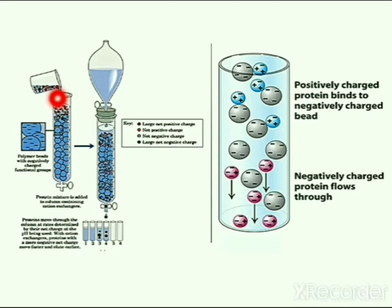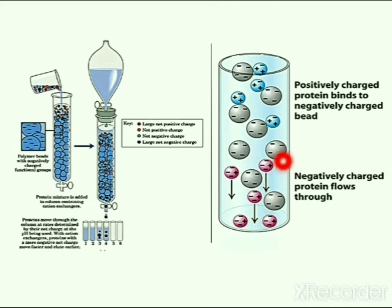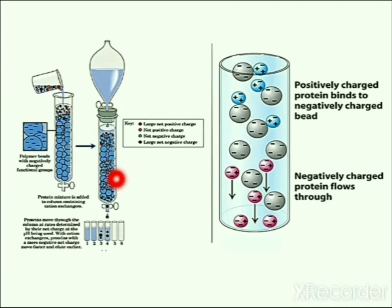When a protein mixture is added to a column containing cation exchangers, proteins move through the column at a rate controlled by the pH being used. Proteins with more negative charge move faster, while proteins with positive charge bind to the negatively charged beds. The final result is the earlier elution of negatively charged proteins. Here the protein mixture is used as the mobile phase, while the column containing the cation exchanger is used as the stationary phase.